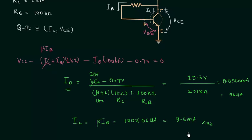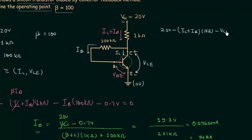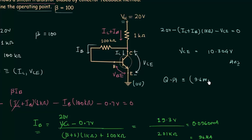The next thing is the calculation of voltage VCE. For this we will apply Kirchhoff's voltage law in the output loop, starting from Vcc and ending at ground. So we have 20 volts minus (IC plus IB) multiplied with 1 kilo ohm, minus VCE, equals zero. When you solve this, VCE equals 10.304 volts. So the operating point is IC equal to 9.6 milliamps and VCE equal to 10.304 volts.